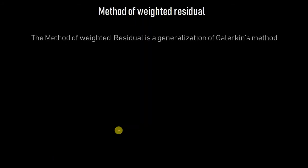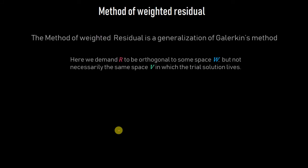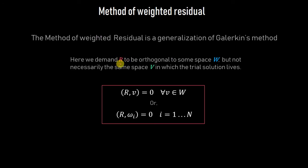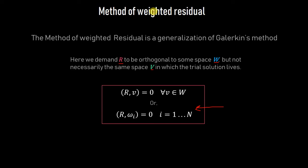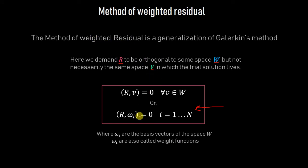The method of weighted residuals is a generalized form of Galerkin's method in which we demand R to be orthogonal to some space W, which is not necessarily the same as the trial space V. Galerkin's method is a special case of the weighted residual method where W equals V. We will focus on Galerkin's method because that is what we will use to develop the finite element model.